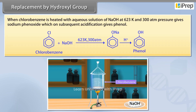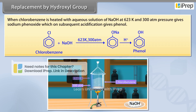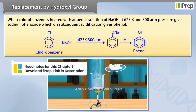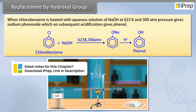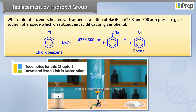When chlorobenzene is heated with an aqueous solution of NaOH at 623 Kelvin and 300 atmospheric pressure, it gives sodium phenoxide, which on subsequent acidification gives phenol.